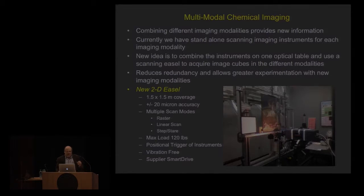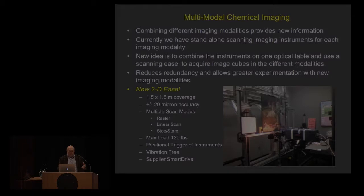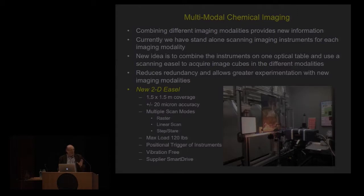In the multimodal chemical imaging case, we want to solve the following problems. We know that combining different imaging modalities provides new information — we do that all the time in point measurements. The question is, what can we get out of the spatial domain? We've all been building standalone spectral imaging systems for each different imaging modality. So we came up with the idea of combining all the instruments on one optical table and using a scanning easel — making the artwork move past a series of different detection systems. This reduces redundancy and allows greater experimentation since we can quickly reconfigure the optical table.